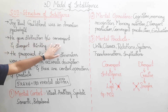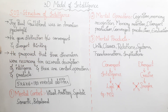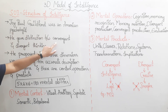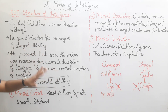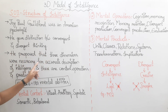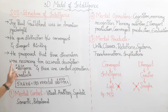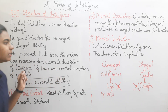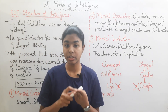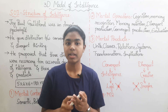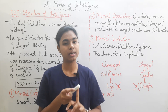Guilford gave the distinction between convergent thinking and divergent thinking. He proposed that three dimensions are necessary for an accurate description of intelligence: content, operations, and products.